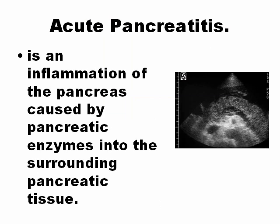Acute pancreatitis is the acute inflammation of the pancreas caused by pancreatic enzymes activating in the surrounding pancreatic tissue, producing damage — in other words, digesting the own body. The function of the pancreatic enzymes, that is the exocrine part of the pancreas, is to digest food in the duodenum. But in acute pancreatitis, these enzymes activate inside the pancreas and produce digestion of the normal live tissue.